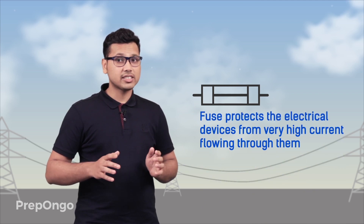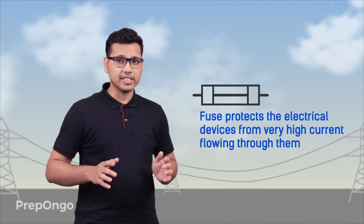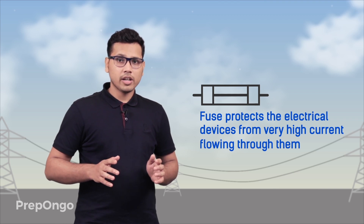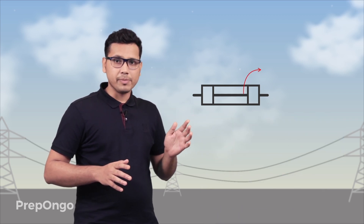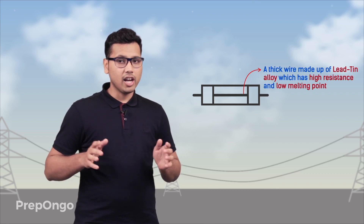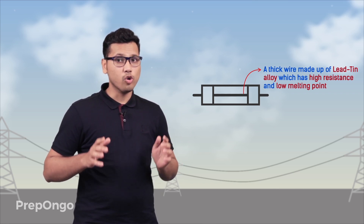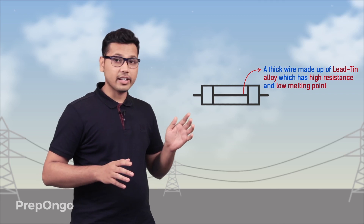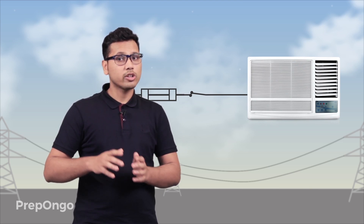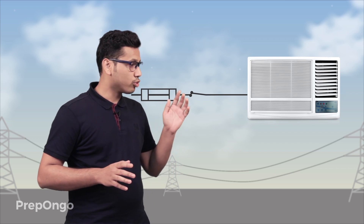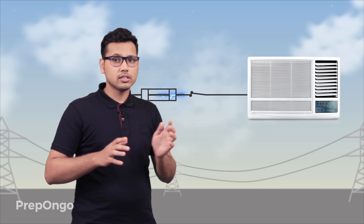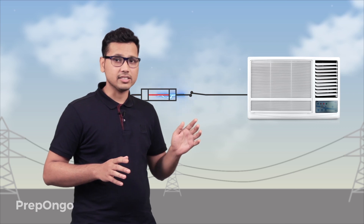One more common application of Joule's heating effect is the fuse. This fuse protects electrical appliances and electrical circuits from very high currents flowing through them. A fuse is nothing but a small wire made of a lead and tin alloy, which has high resistance and a low melting point. This fuse wire is connected in series with the circuit, so when large currents more than the specified values flow through the circuit, the temperature of this wire increases and it melts, breaking the circuit.